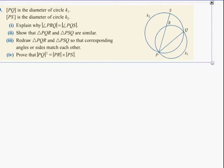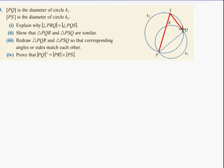Explain why angle PQR is the same as angle PQS. Well, if you look at PQR, it has a diameter. The points P, Q and S are all on the same circle. Therefore, if all three points are on the circle and one of the lengths is the diameter, the angle opposite the diameter must be 90 degrees.